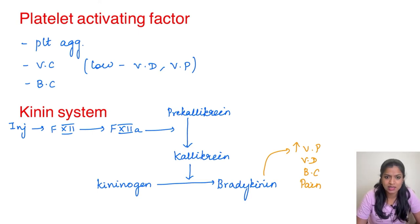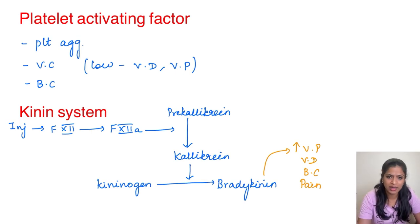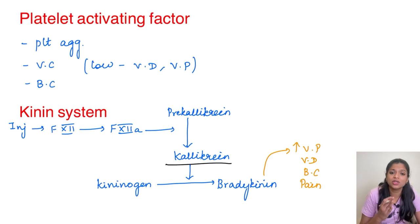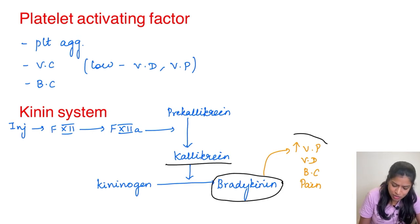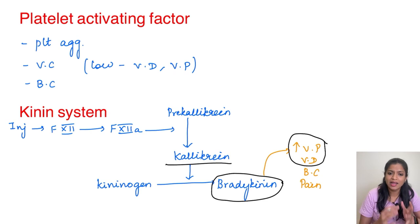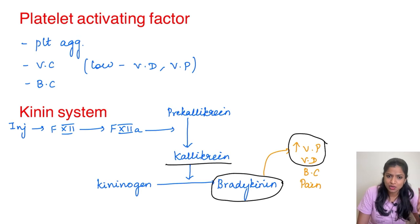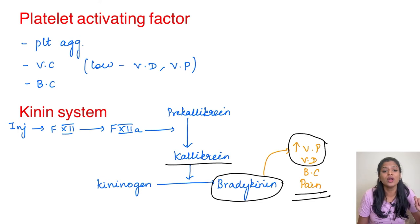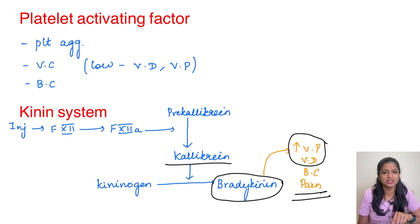Moving on to the kinin system. Whenever there is an injury, clotting factor 12 gets activated into clotting factor 12a, which causes the conversion of pre-kallikrein to kallikrein. Kallikrein is responsible for the conversion of kininogen into bradykinin. Bradykinin is an inflammatory mediator whose most important action is causing vascular events — vasodilatation, vascular permeability, and bronchoconstriction, exactly like histamine. Additionally, bradykinin is also responsible for pain — so both prostaglandin E2 and bradykinin are responsible for pain.